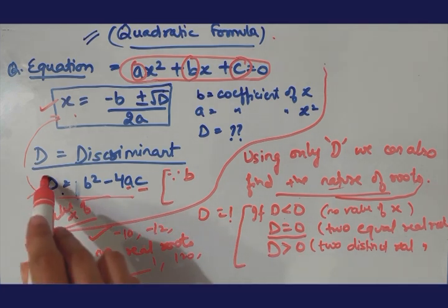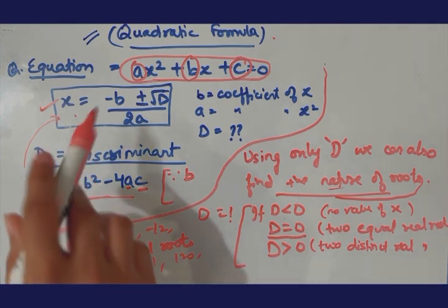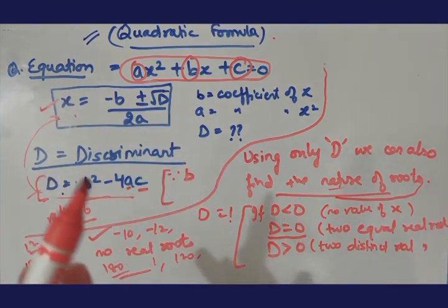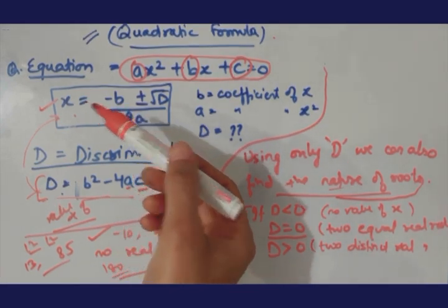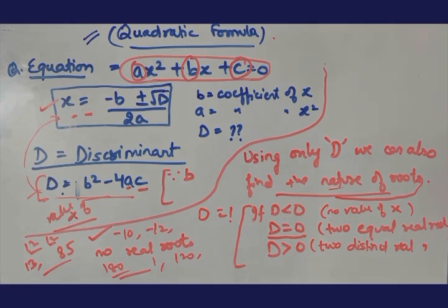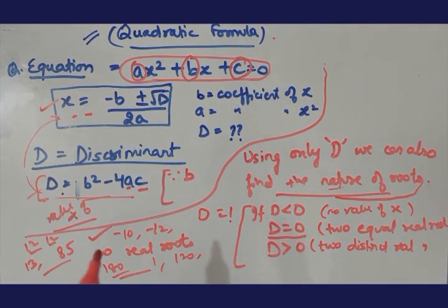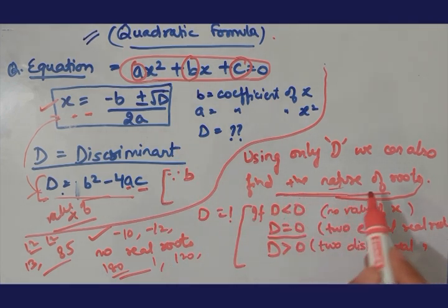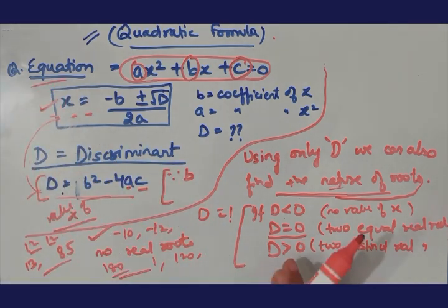So when you are here, you will get an idea yourself. If D is negative, please stop there because this formula will not apply. There will be no real roots. If D is 0, when you add this formula, you will get an idea that you will get the same values. If D is more than 0, then there will be two different values of x. So this is the basic thing, finding the nature of the roots and the formula, how we can use the quadratic formula.